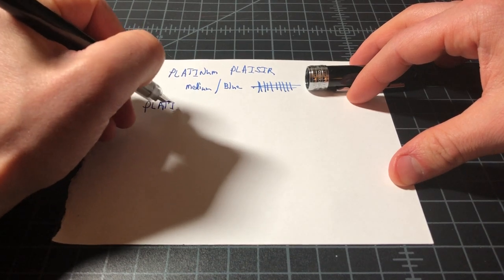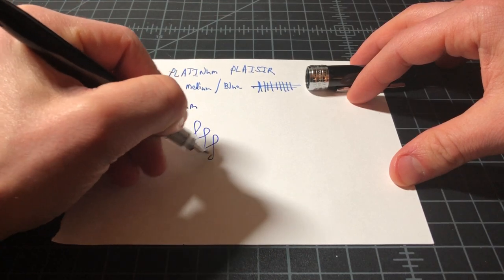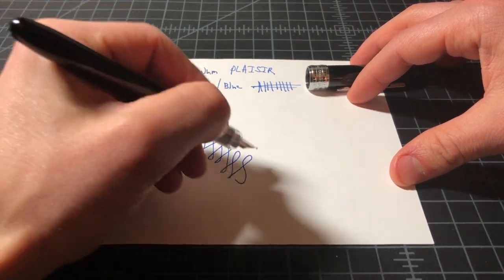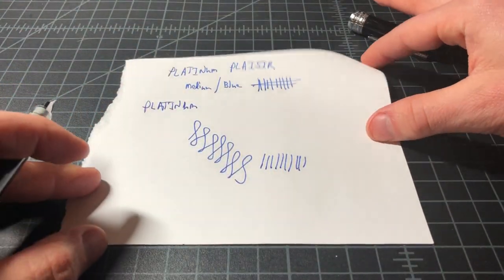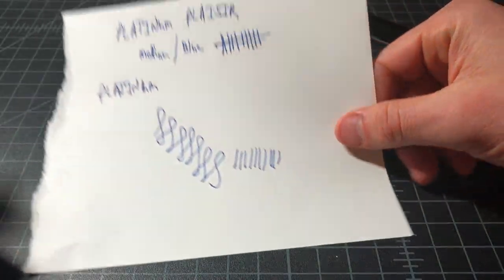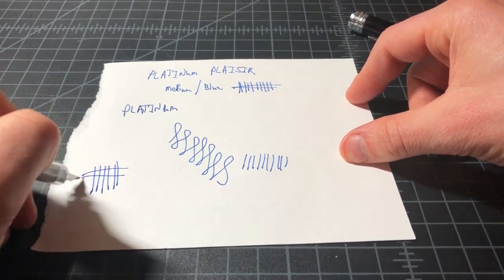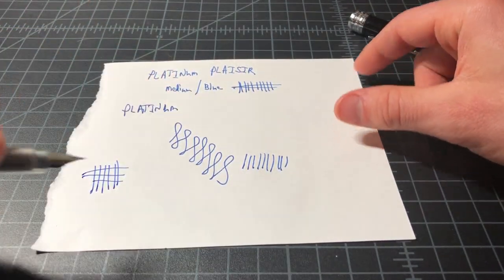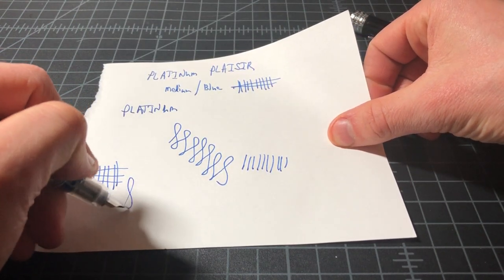It's a nice medium platinum. The inconsistent ink flow has been a little bit inconsistent. I've had it stopping and starting on me a lot. I found that if I give it a good shake, which is generally not a great idea with fountain pens, then it'll keep going pretty well.